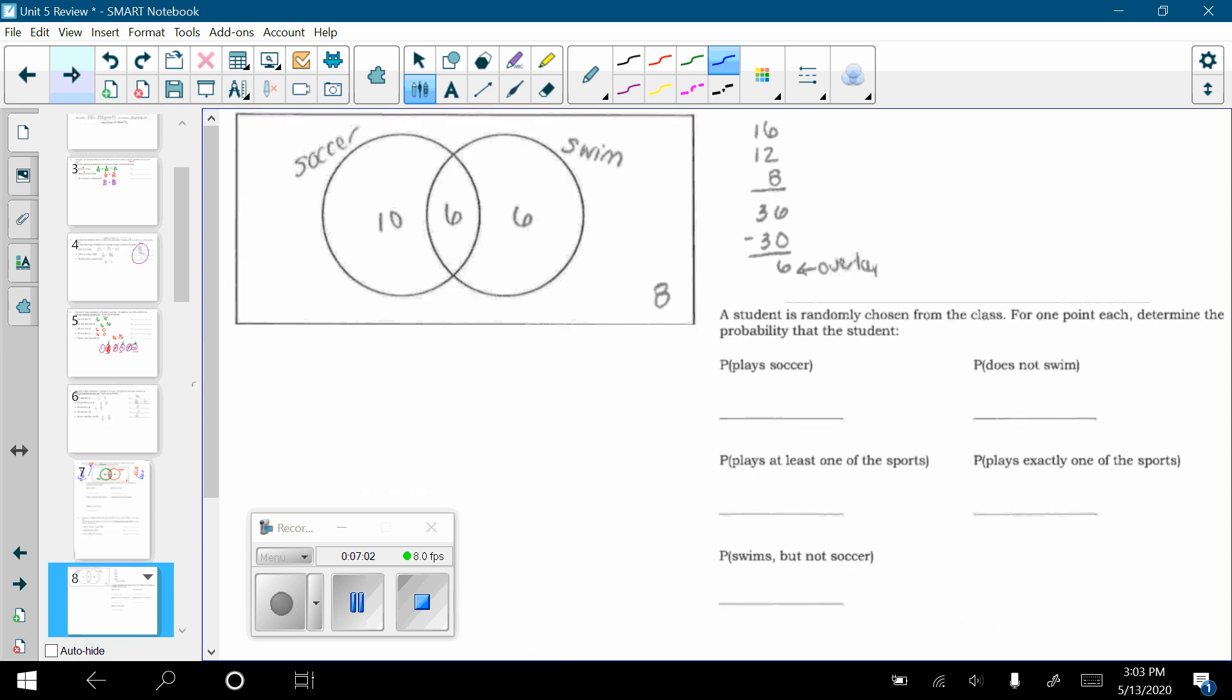Once I have this diagram, then I can answer the questions. So, the probability that a randomly chosen person plays soccer, there are 30 people. And there are, within the soccer circle, 16 people. The probability of not swimming. Okay, I want to disregard the people who swim. The people who swim are these folks. So, the people who are outside of that swimming circle are the other people. So, this is a complement. Complementary probabilities.